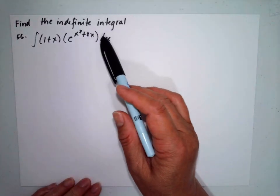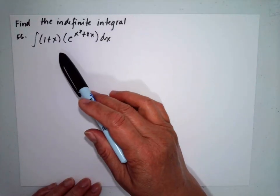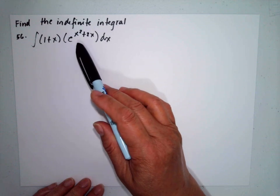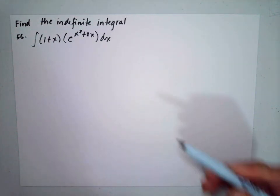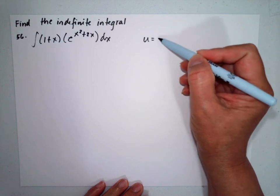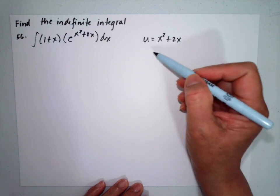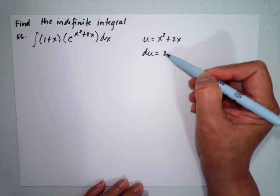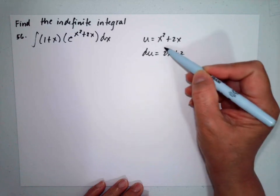Find the indefinite integral of (1 + x) multiplied by e to the x squared plus 2x, dx. Our u will be x squared plus 2x, so du is 2x plus 2, dx.